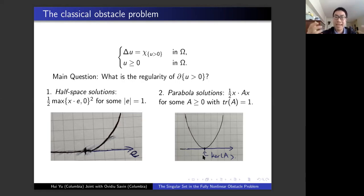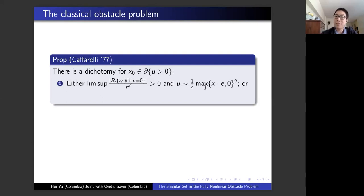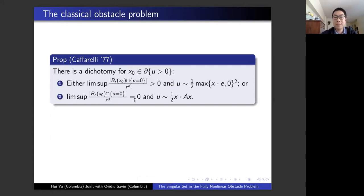The main observation is that somehow these two are the only possible behaviors along a free boundary. This is what Caffarelli proved in 1977: there is a dichotomy for free boundary points. Take a free boundary point x_0; there are only two possibilities. Either the density of the contact set is positive — then your solution looks more or less like a half-space solution — or the contact set is of zero density at the point, and your solution looks more or less like a parabola.